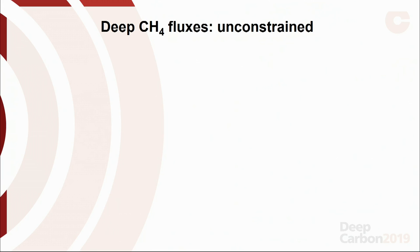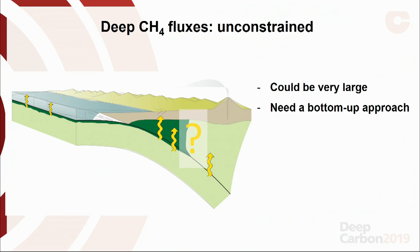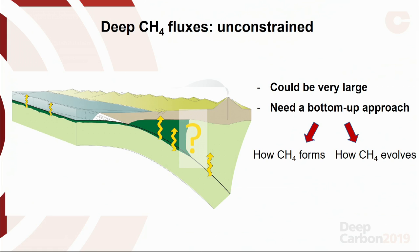Fluxes — unconstrained. We don't know anything about the fluxes. We are still trying to compile a list of potential processes. But what I can say, based on my study of natural samples, is that they could be very large, and we need a bottom-up approach. We need to define how this methane forms, how it evolves at depth, and how it affects other carbon reservoirs.